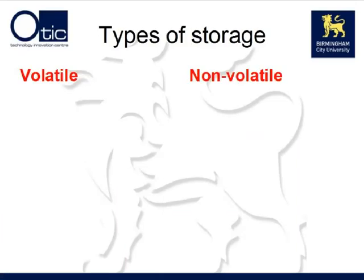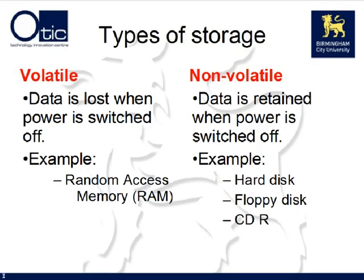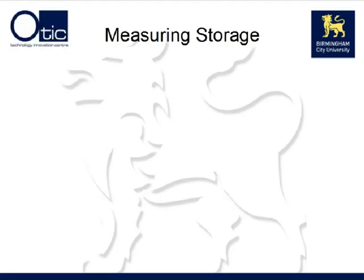As we previously saw, we can categorize storage as volatile or non-volatile, with volatile storage losing the data when the power is turned off, and non-volatile retaining the data when the power is turned off. If you think about it, this makes sense — if you have a program running and then you switch off the computer accidentally, that program will no longer be running when you start the computer up again. Before we look further at the types and technologies of storage device available, we now need to understand how to measure storage.